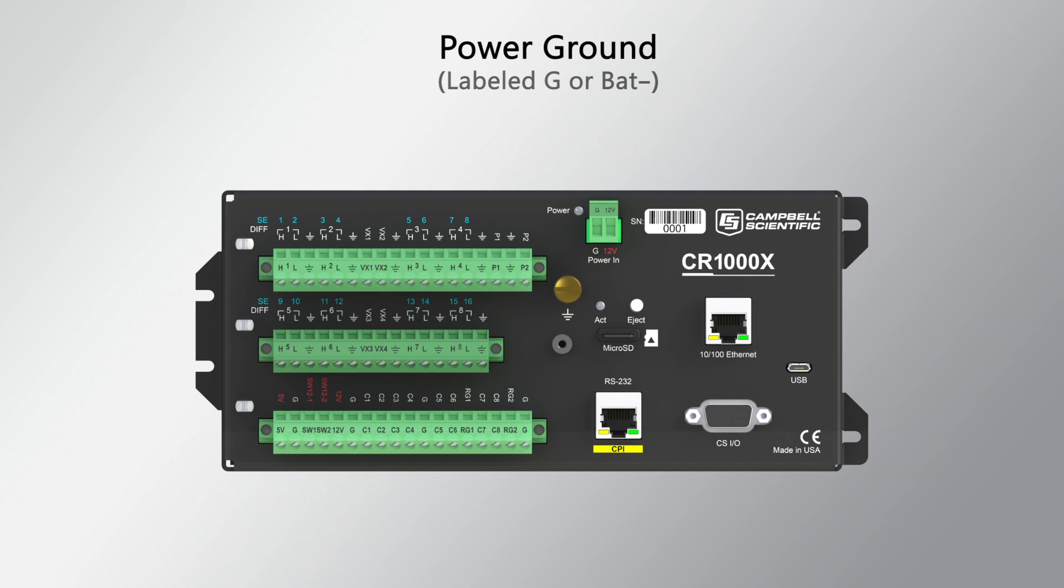Power ground, labeled with the capital G and sometimes with BAT negative, is the return pathway for 3.3 volts, 5 volts, 12 volts, and digital sensors. All channels labeled G are connected to each other inside the wiring panel, so they can be used interchangeably.